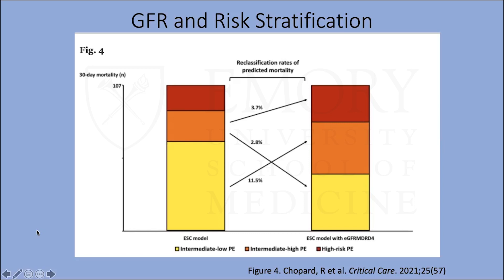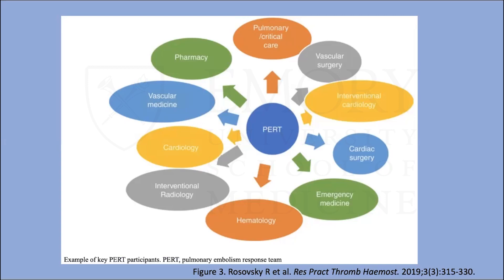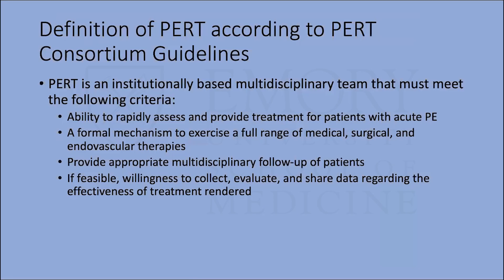Once the PERT alert is activated, the pulmonary embolism response team — a multidisciplinary team involving cardiology, vascular medicine, interventional cardiology, CT surgery, vascular surgery, emergency medicine, hematology, IR, pharmacy, and pulm/crit — works together to determine the best therapy. Per the PERT consortium guidelines, the team rapidly assesses, provides appropriate treatment across the full range of medical, surgical, and endovascular techniques, provides follow-up, and contributes to research.